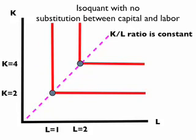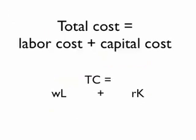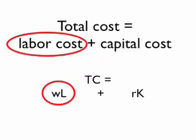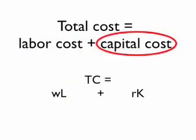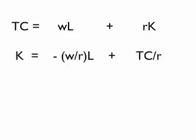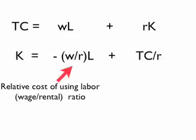Now we want to bring in the cost side of the equation for the firm, because the firm is going to be looking to minimize costs in order to reach a certain level of output, or equivalently to maximize profits. Total costs for the firm are made up of labor costs — the wage multiplied by the number of workers used — and capital costs — the return to capital R multiplied by the number of units of capital. Rearranging this equation and solving for capital, the slope of the line is the relative cost of labor, the wage-rental ratio, which is the trade-off between purchasing labor or capital to produce the output.